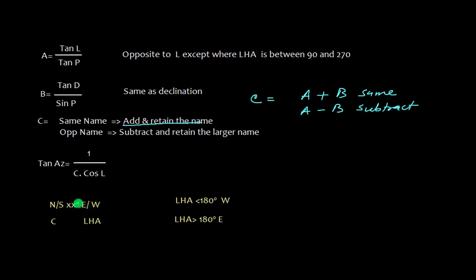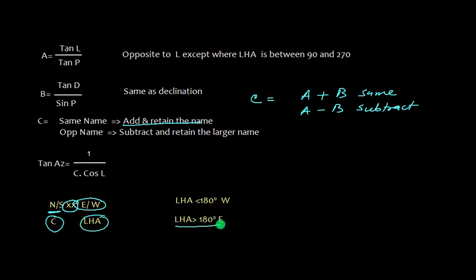Whatever value we obtain, we need to use the prefix north or south — that depends on the name of C. Similarly, we put east or west, which depends on LHA. If the LHA is greater than 180 degrees, it is east, and if the LHA is less than 180 degrees, it is going to be west.